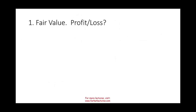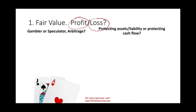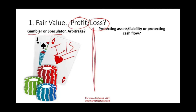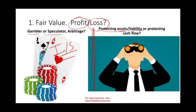Under fair value accounting, we have to account for our hedges at fair value. Once we have a fair value, we have to determine either the profit or the loss and where they go. We have two types of fair value hedging. If you are a speculator, any profit or loss goes on the income statement. If you have a hedging position to protect your asset, liabilities, or cash flow, you have to decide whether to designate the hedge as a fair value hedge or a cash flow hedge.